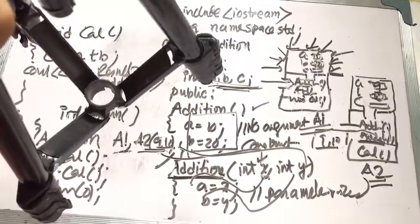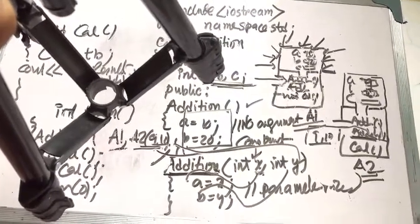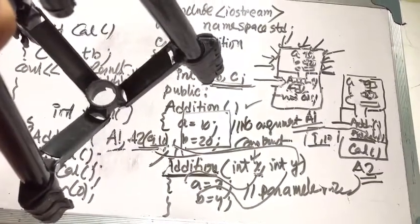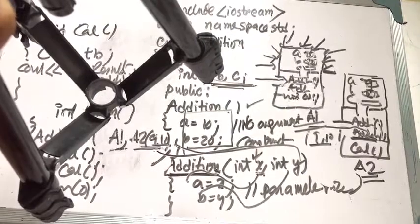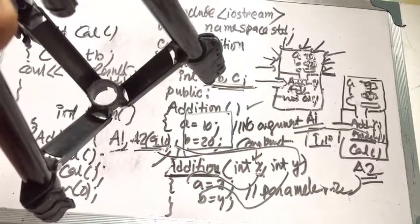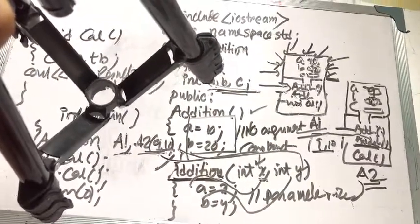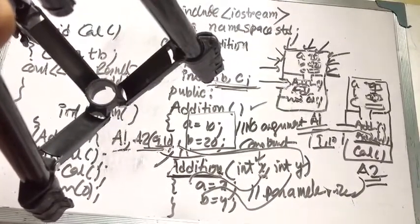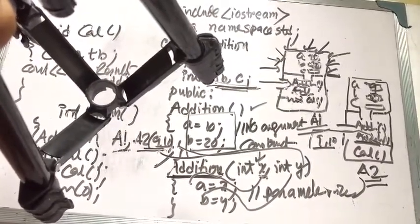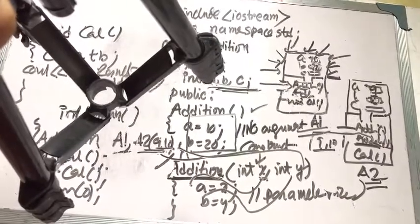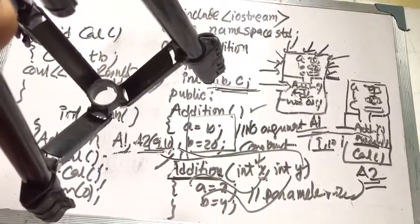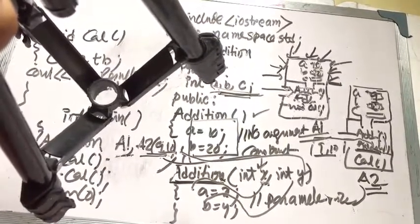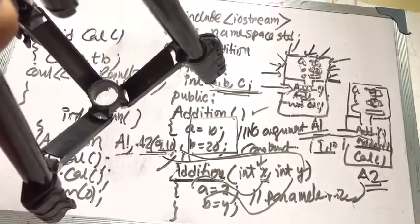Then return 0 stops the program. This is how the constructor is used. The constructor is a special member function — very useful in object-oriented programming languages like C, C++, and Java.